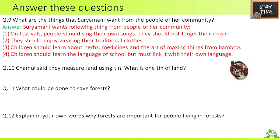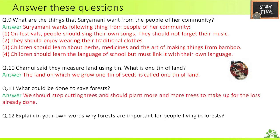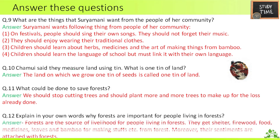Tenth — Chamai said they measure land using tin; what is one tin of land? The land on which we grow one tin of seeds is called one tin of land. Eleventh — what could be done to save forests? We should stop cutting trees and plant more and more trees to make up for the loss already done. Twelfth — explain in your own words why forests are important for people living in forest: forests are the source of livelihood; people get shelter, firewood, food, medicines, leaves, and bamboo for making things, and moreover their sentiments are attached with forest.